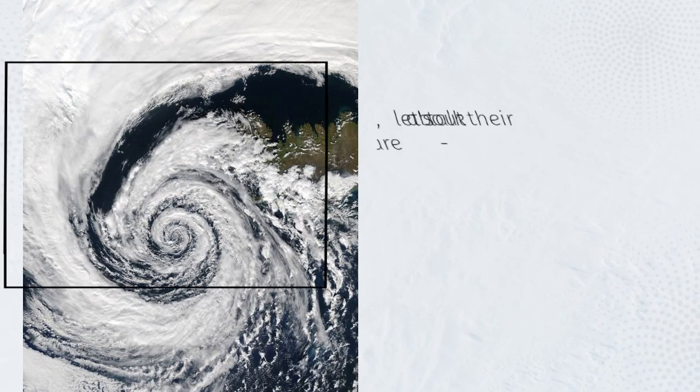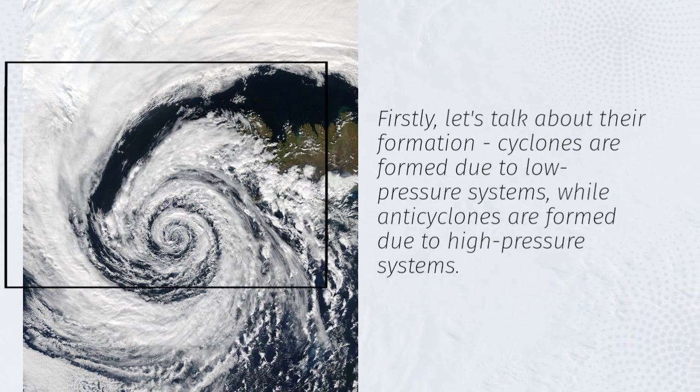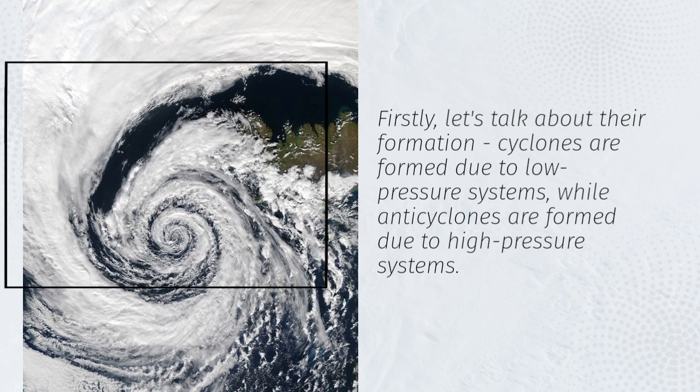Firstly, let's talk about their formation. Cyclones are formed due to low pressure systems, while anticyclones are formed due to high pressure systems.